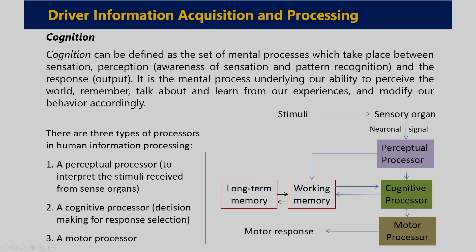Next is cognition. Cognition can be defined as the mental process which takes place between sensation (the first step), perception, and finally response selection. It is the mental process underlying our ability to perceive the world, remember, talk about and learn from our experiences, and modify our behaviour accordingly. Any stimulus coming to the sensory organ generates a neuronal signal that reaches the perceptual processor, then the cognitive processor, then the motor processor, which finally executes the motor response through neuromuscular function. There are mainly 3 types of processors: perceptual, cognitive, and motor processor.